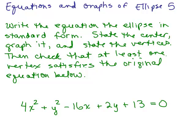This is part five of equations and graphs of ellipses. We're going to take this equation of the ellipse which is in general form, write it in standard form, state the center, graph the ellipse, state the vertices, and then check that at least one of those vertices satisfies the original equation.